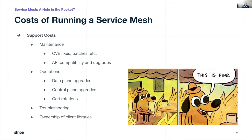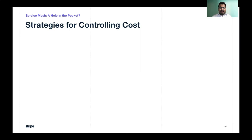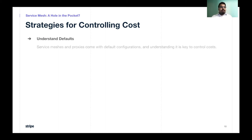That wraps up costs. Now let's look at some strategies for controlling costs. The first strategy is to understand defaults. Service meshes and proxies come with default configurations which can affect the proxy's behavior for routing requests or the amount of data generated, so it becomes important to understand these defaults in order to control costs.